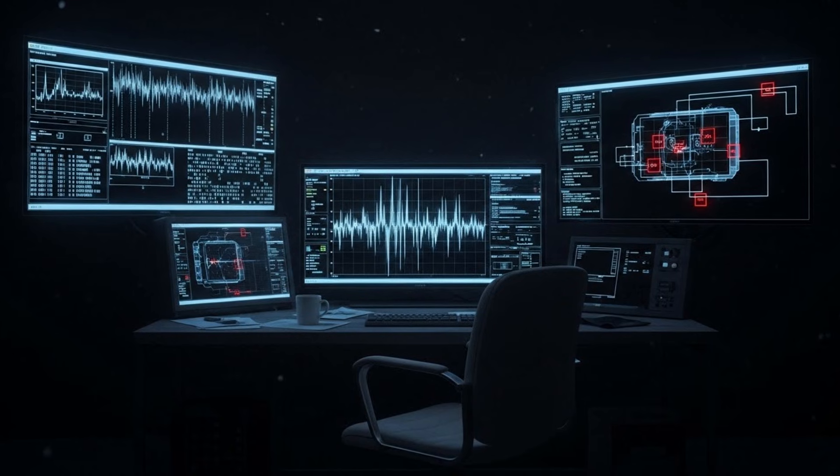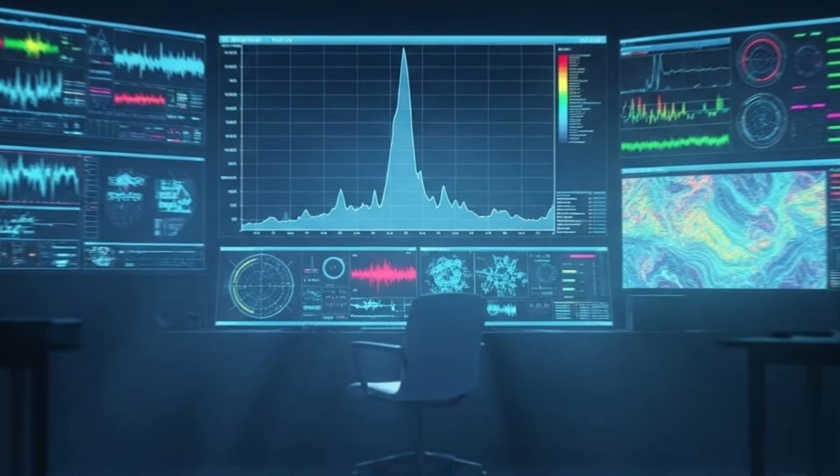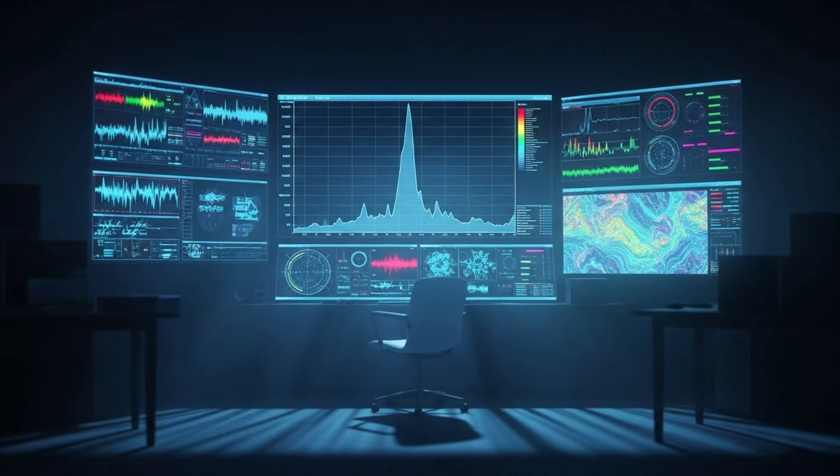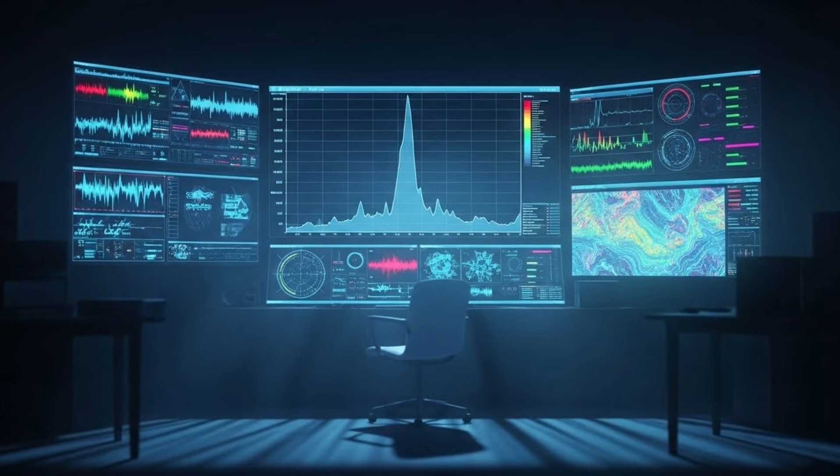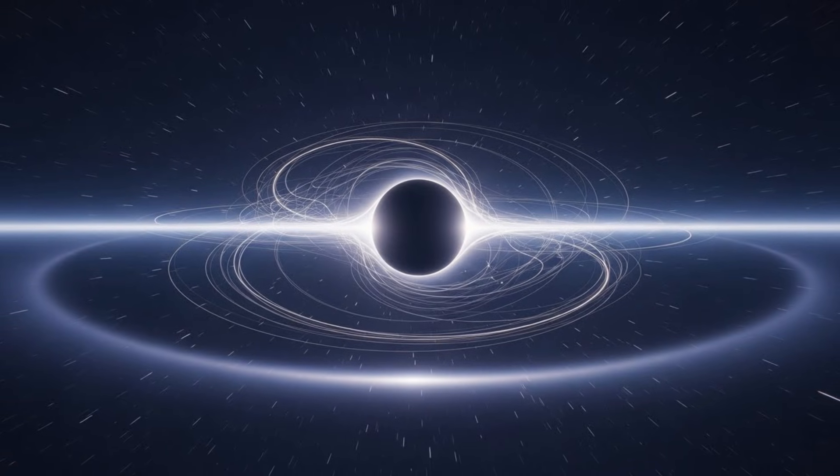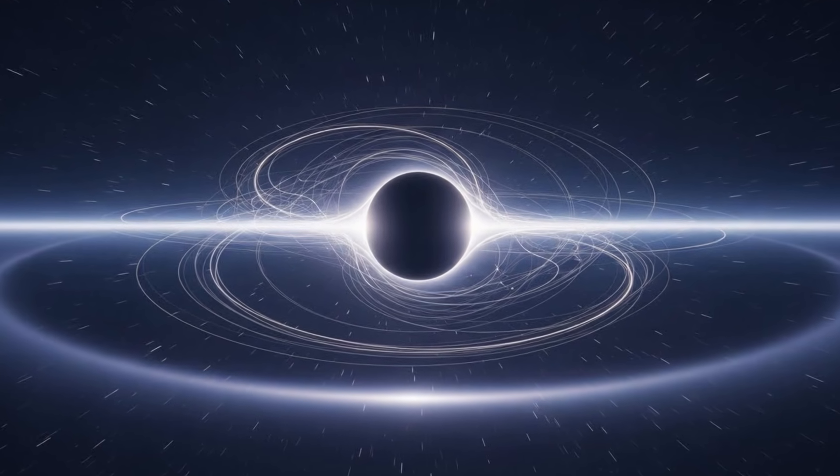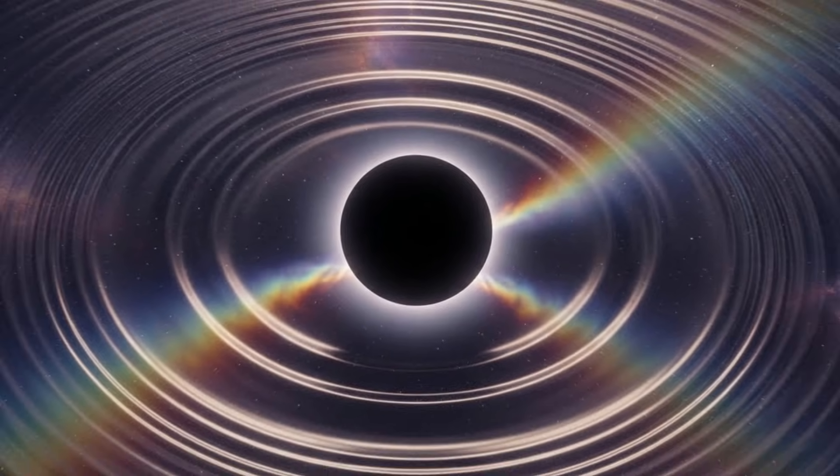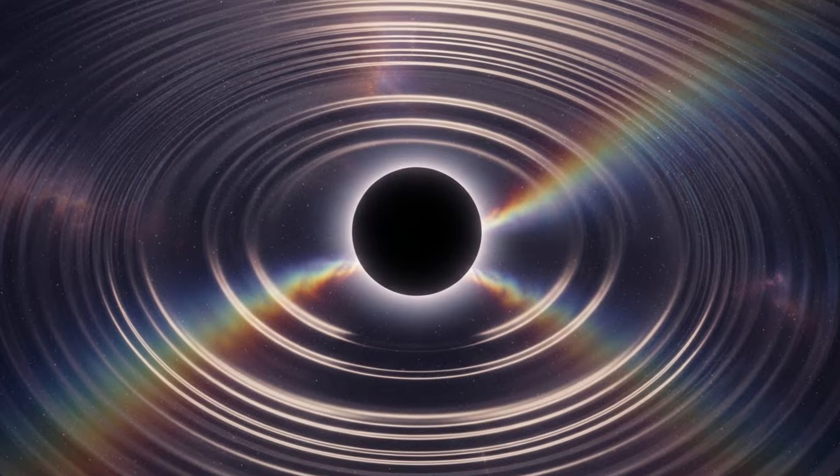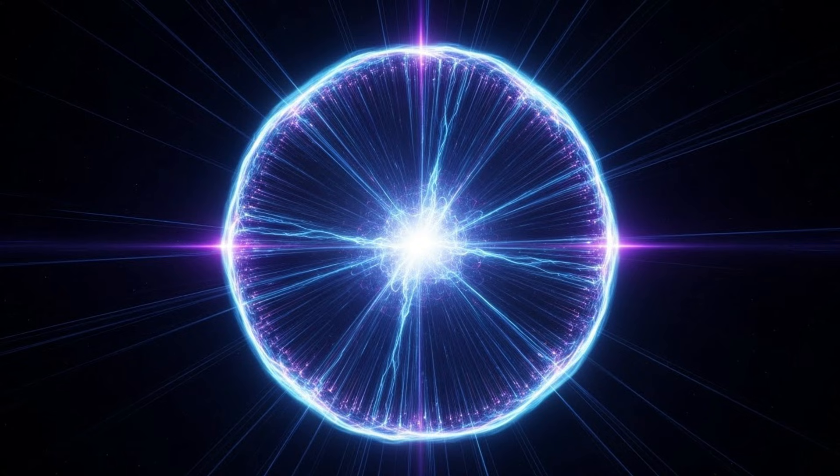Now, let's be clear. CERN didn't announce this to the world. There was no press conference, no headlines. The data was classified as anomalous and shelved for further review. Why? Because what they were looking at didn't fit any model. Not quantum mechanics, not general relativity, not string theory. If a black hole evaporates through Hawking radiation, that radiation should be thermal, random, a byproduct of quantum fluctuations at the event horizon. It's like steam rising from boiling water: chaotic, shapeless, governed by entropy. But this wasn't chaotic.